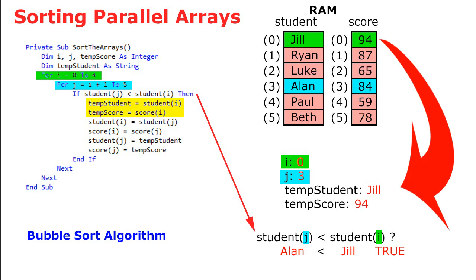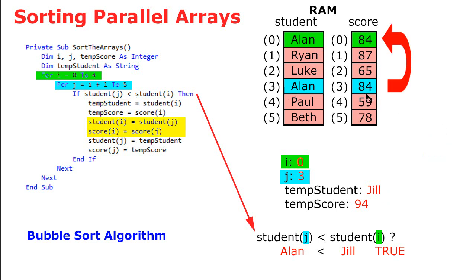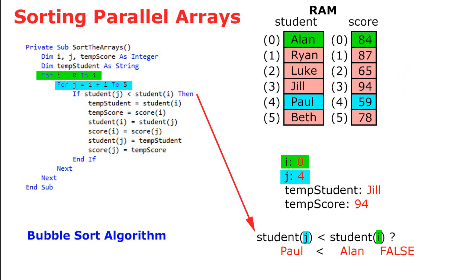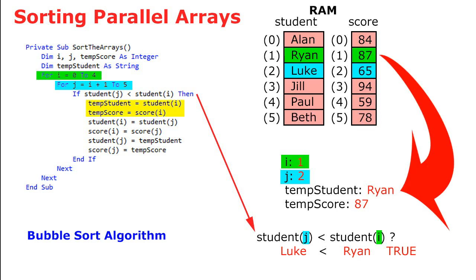We increment j to three and compare Jill and Alan. Alan is less than Jill — true — so we swap: Jill and 94 go into temp, Alan and 84 go into element sub zero, then temp goes into element sub three. Next, j increments to four; we compare Paul and Alan — false, nothing happens. Then j becomes five; we compare Alan and Beth — also false. We've reached the upper limit of j, so i increments to one.